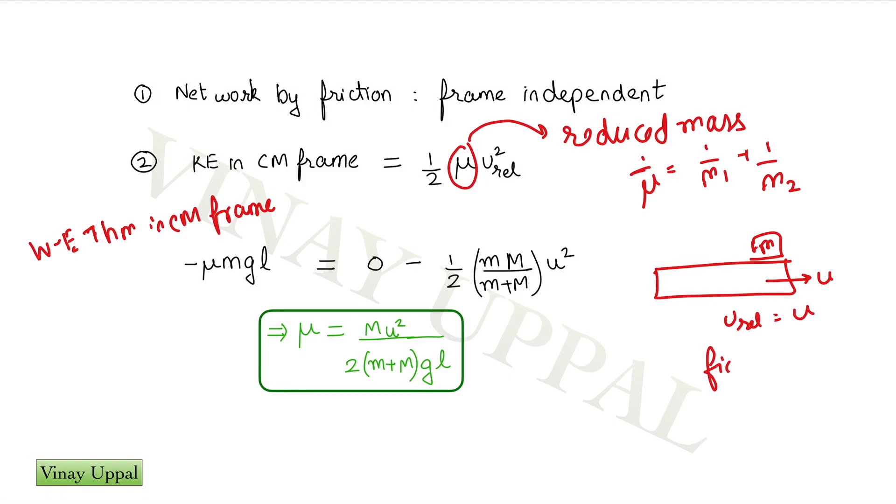But finally, both of them are traveling with the same speed because slipping is stopped. And therefore, the final relative velocity is 0. And so in the center of mass frame, the final kinetic energy is 0.